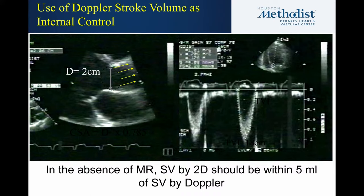For example, if you have a stroke volume by 2D of 75 and by Doppler of 71, that's fine — up to about 5 cc difference is okay. But if stroke volume by 2D is 75 and by Doppler only 55 with no mitral regurgitation, there's a problem. One of the two measurements has an error and you have to resolve that before making a report.